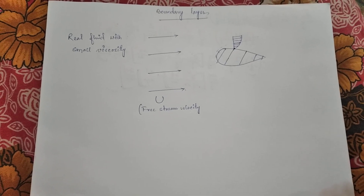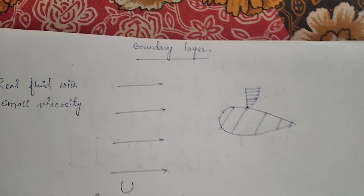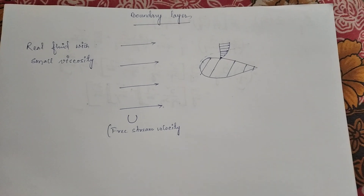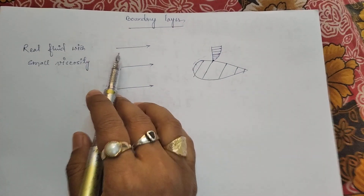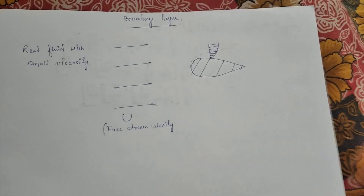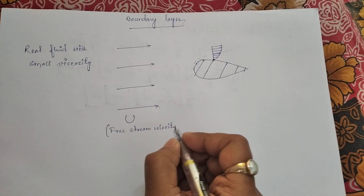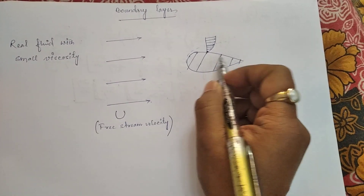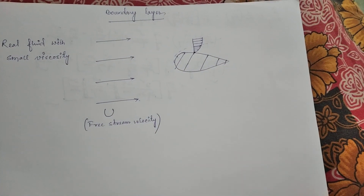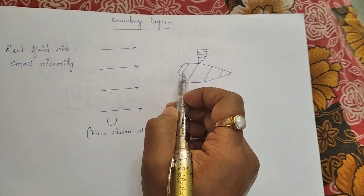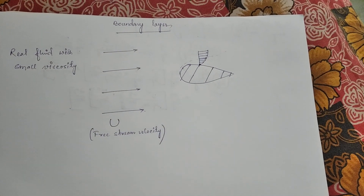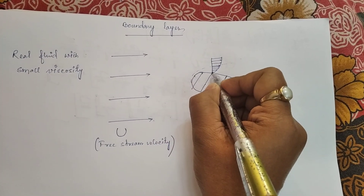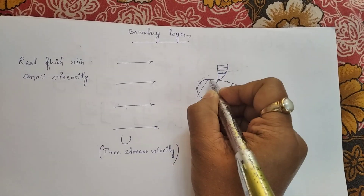Good morning students. Today we will discuss what is boundary layer and how the boundary layer is formed. First, we consider a real fluid with small viscosity moving along a particular direction with velocity capital U, which is called the free stream velocity or undisturbed velocity. This solid body has a structure like the wing of an aeroplane. When a fluid moves past this surface, Prandtl from his experiment has shown that the fluid sticks at the surface of the body.